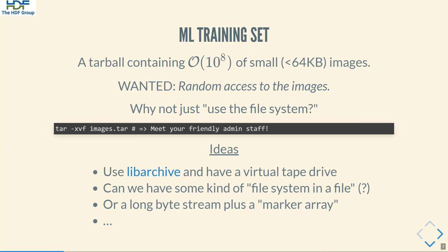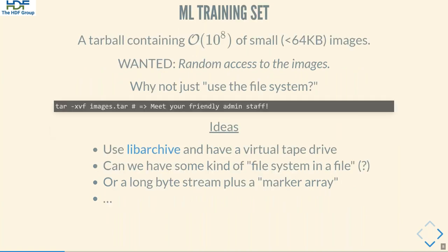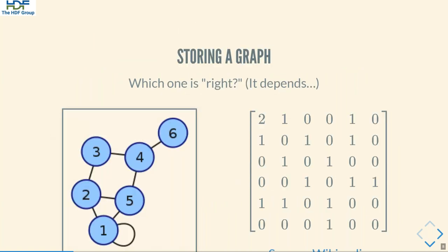We often have little control over the size or object count that life throws at us. Take the example of a machine learning training set where we often see small objects but lots of them. Obvious questions are: what can be done, do we have any options, and what are they?